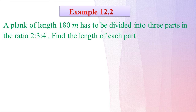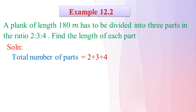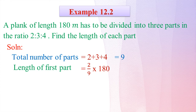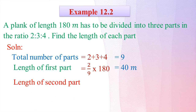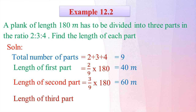A blanket of length 180 metres has to be divided into 3 parts in the ratio 2 is to 3 is to 4. Find the length of each part. Total number of parts equals 2 plus 3 plus 4 equals 9 parts. Length of first part: 2/9 multiplied by 180 equals 40 metres. Length of second part: 3/9 multiplied by 180 equals 60 metres. Length of third part: 4/9 multiplied by 180 equals 80 metres.